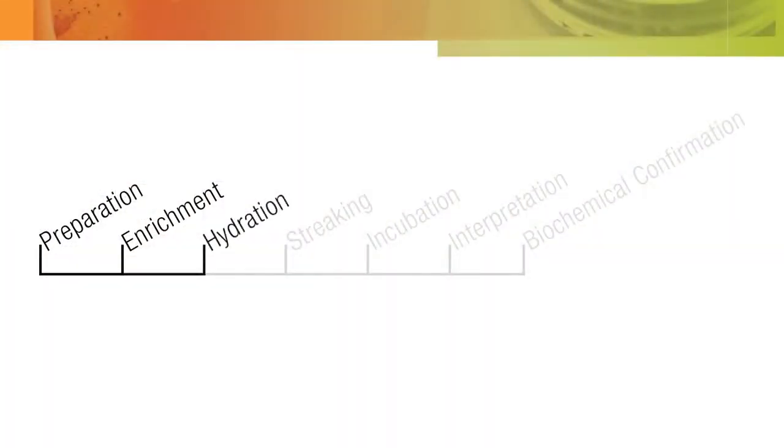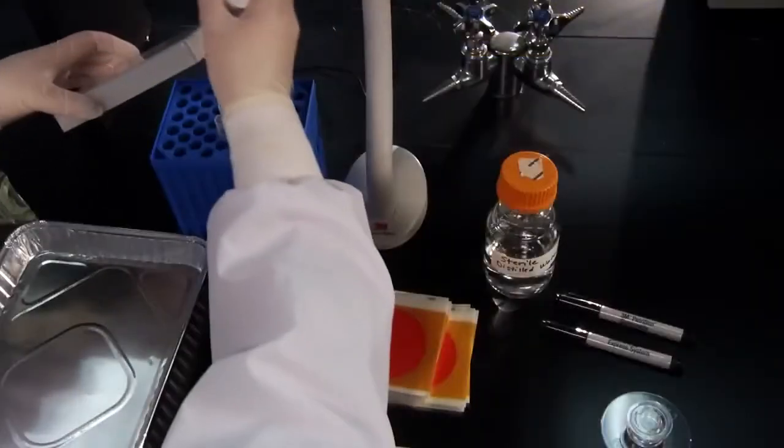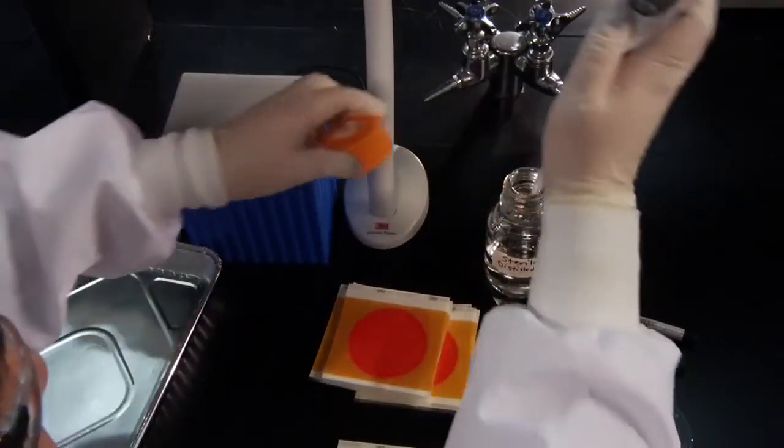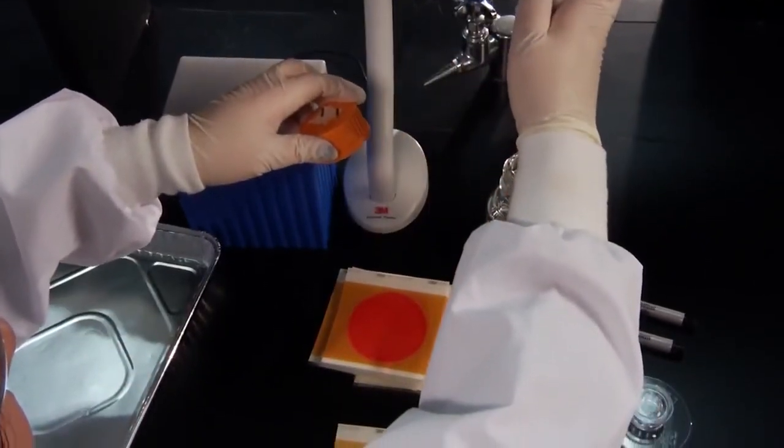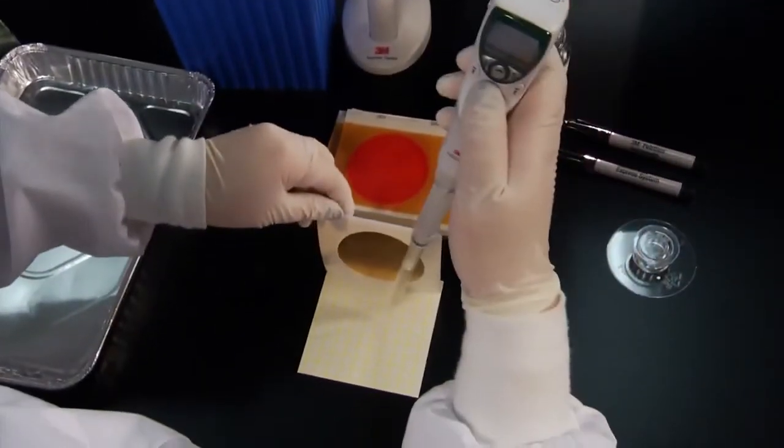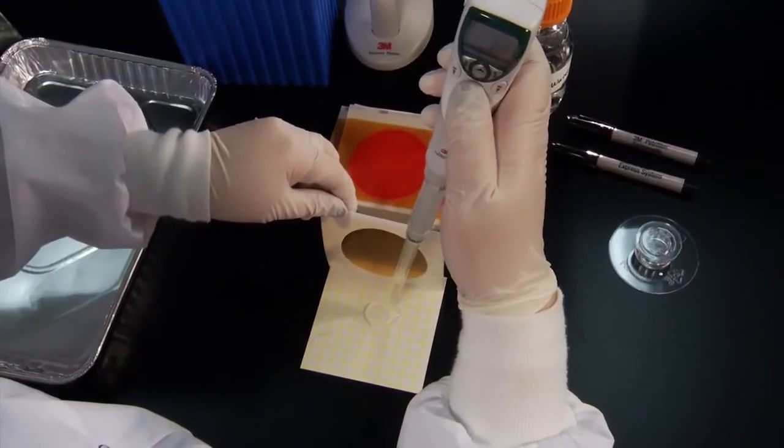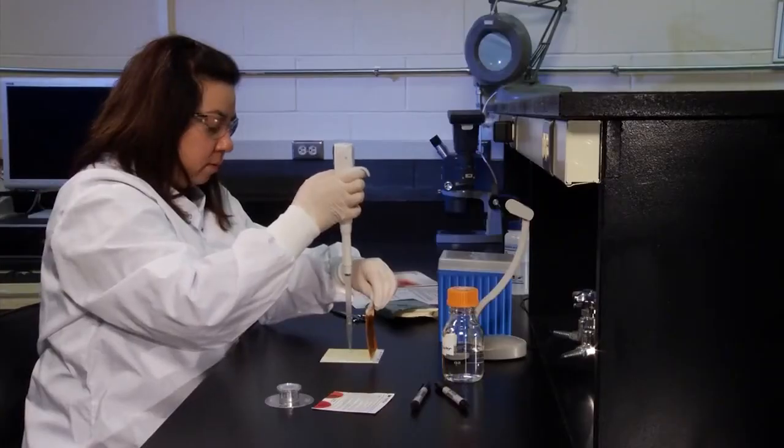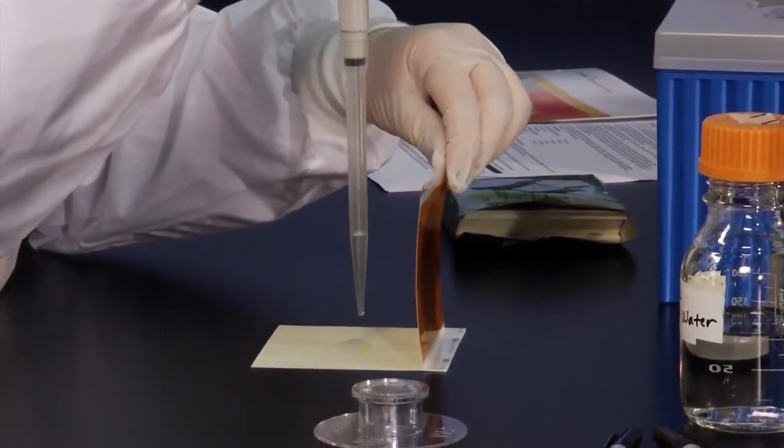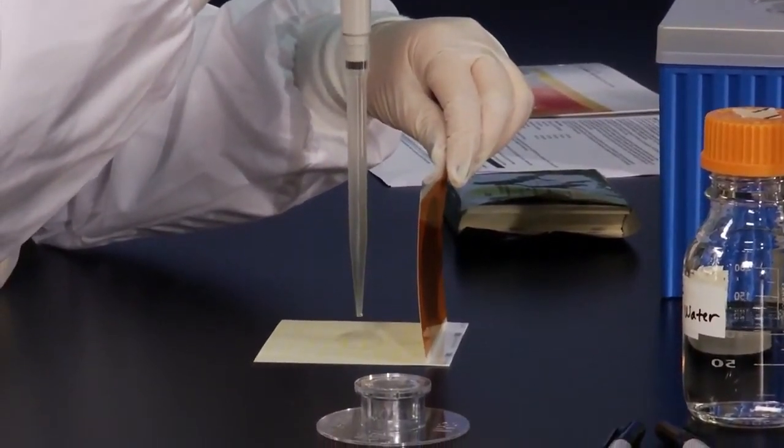The next step is the hydration procedure. To hydrate the 3M Petrifilm Salmonella Express Plate, place the plate on a flat level surface. Lift the top film, and with the pipette held vertically, dispense 2.0 milliliters of the prescribed sterile diluent onto the center of the bottom film. Do not close the top film before dispensing the entire 2.0 milliliter volume.